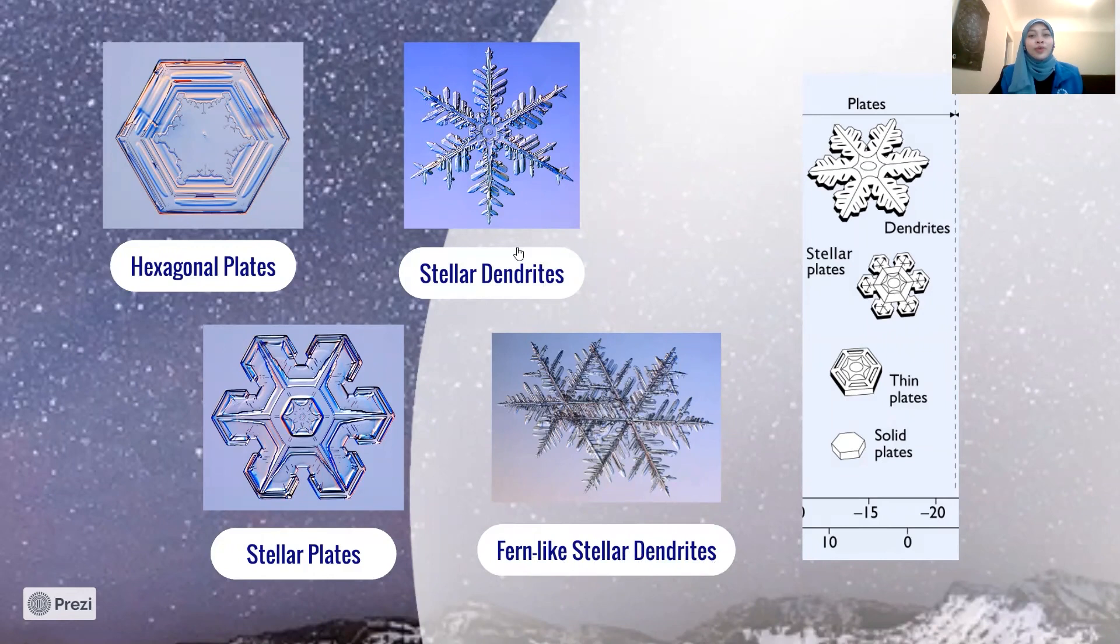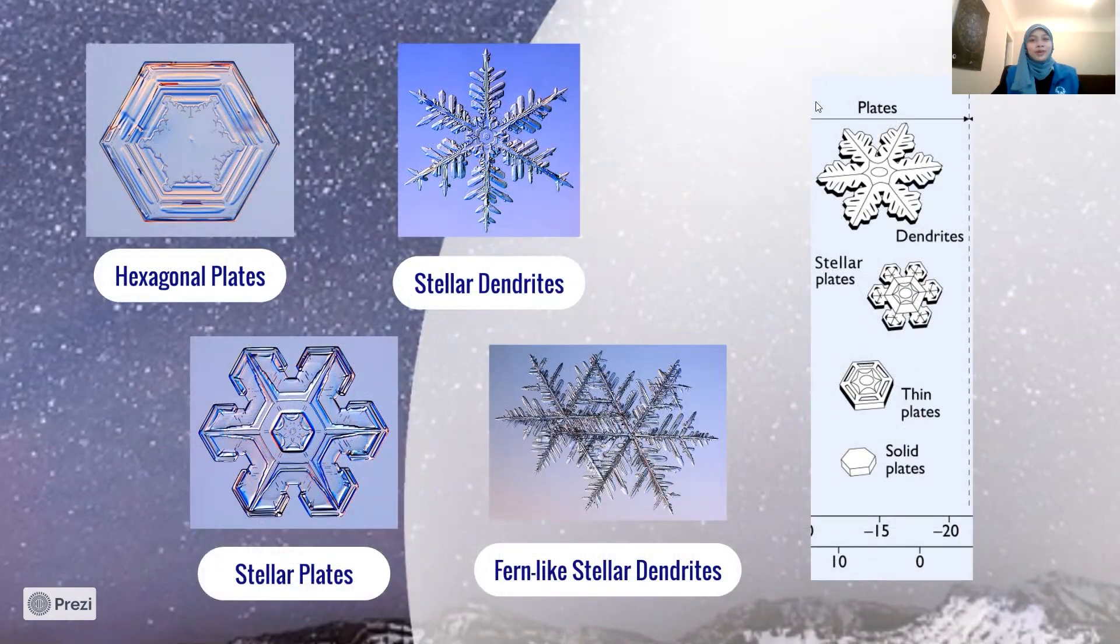Snowflakes are called stellar when they branch out to look like a star, kind of like these three snowflakes here. Now did you notice anything interesting about these snowflake shapes? You can pay attention to how many sides or arms they have. As you can see, most of them have one, two, three, four, five, six sides. And for the stellar snowflakes, they have one, two, three, four, five, six arms. Isn't that interesting? Out of any shape that they can take, they either have six sides or six arms. So how could this happen?